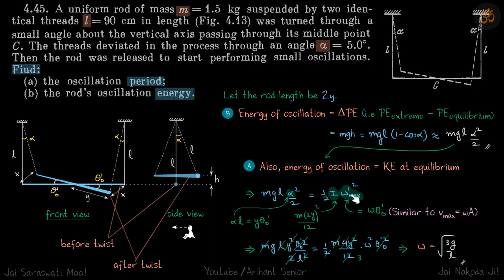I for the rod about its axis is mL squared by 12. We have assumed the rod length to be 2L, so I will be m into 2L whole squared by 12. Now we have found omega dash max in terms of theta naught dash, but here we have a term of alpha, so let's relate theta naught dash and alpha.